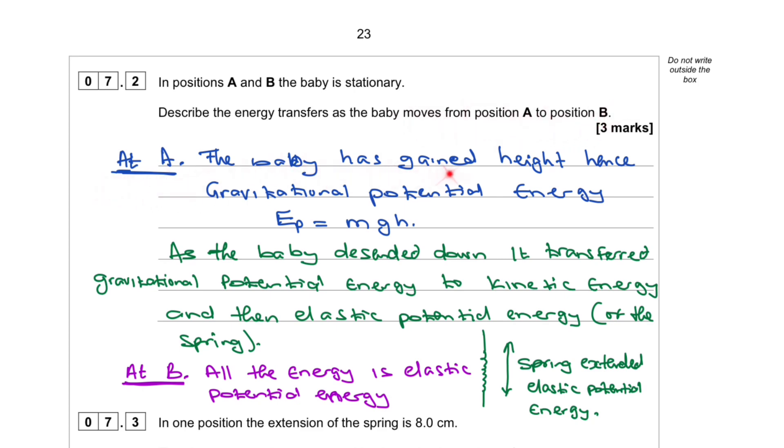At position A, the baby has gained height, hence gravitational potential energy. Gravitational potential energy equals mgh, where h is the height that the baby gained.